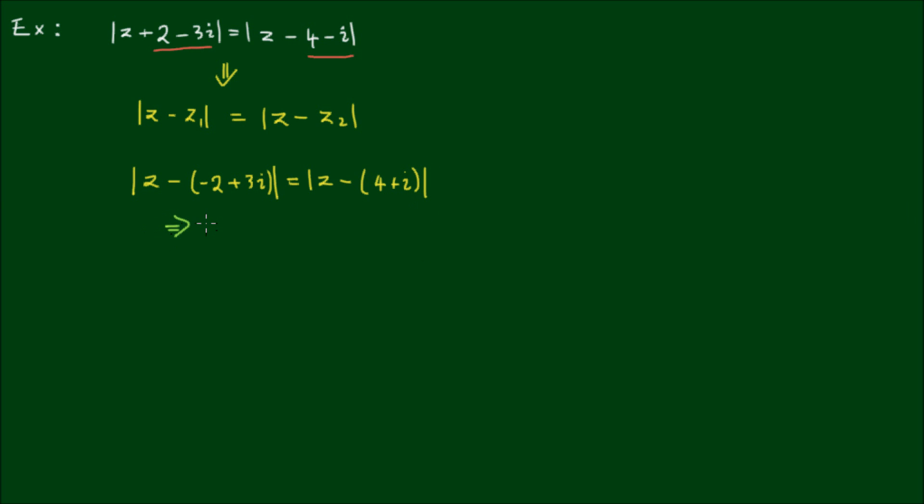Okay, so we've deduced that z₁ = -2 + 3i. And that z₂ = 4 + i.